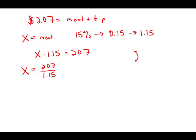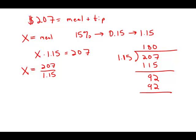And because we need to find an exact answer, we need to do long division here. How many times does 1.15 go into 207? Well, it goes in 100 times. That's 115. When we subtract, we get 92. How many times does 1.15 go into 92? Well, it goes in 80 times. And as it turns out, 80 times 1.15 is exactly 92.